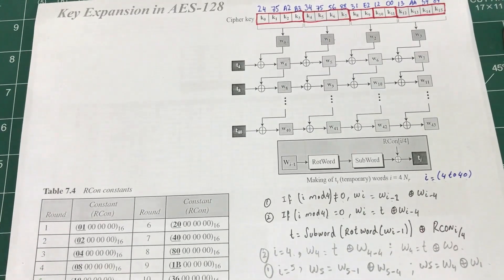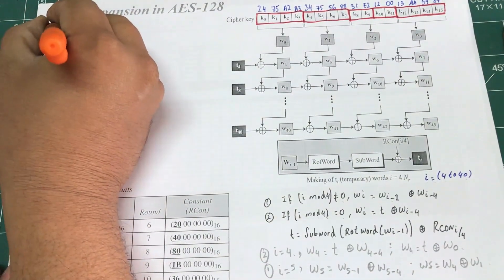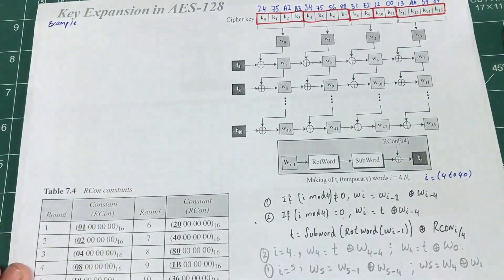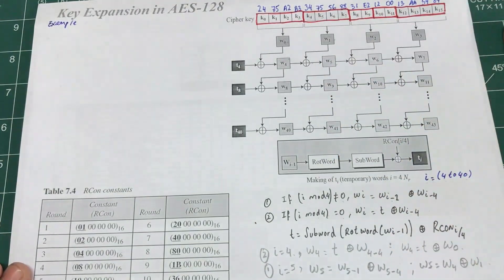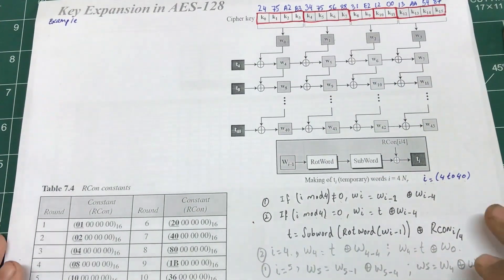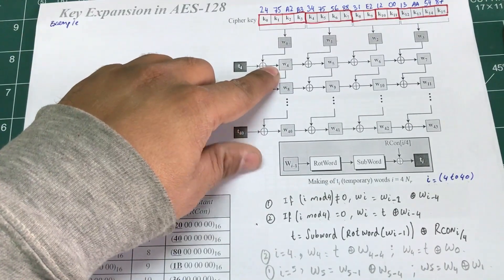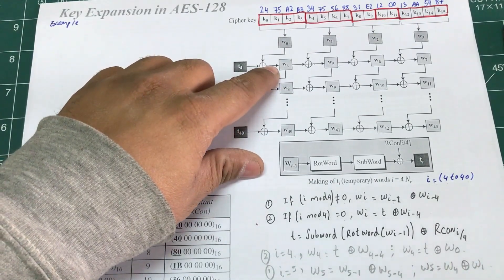Alright guys, so let's do an example. Let's cut everything short and do an example. These are just free round transformations. So let's calculate W4 and learn how to do that.